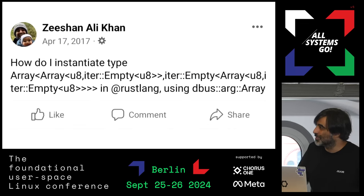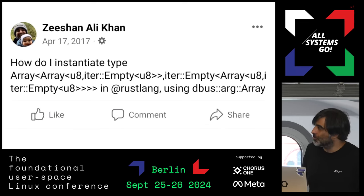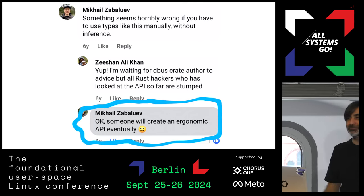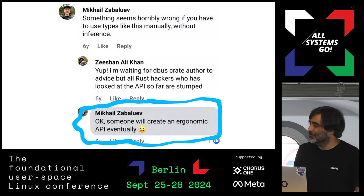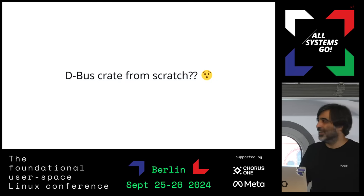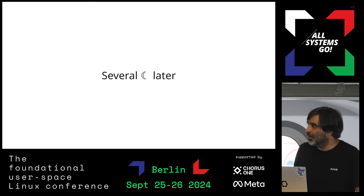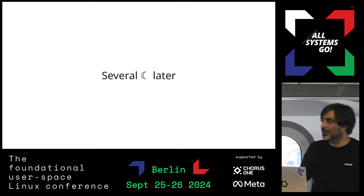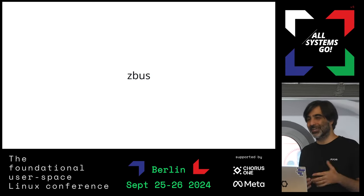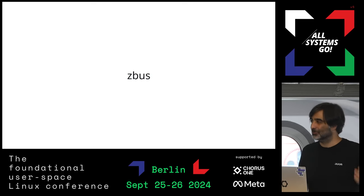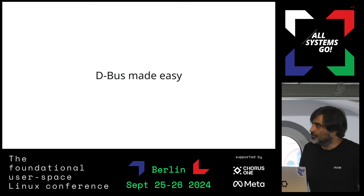I was asking on a Facebook post: 'Does anyone know how to deal with these very complicated types?' A friend of mine who also does Rust said someone would eventually come up with a more ergonomic Rust library for DBus. I was like, 'Yeah, maybe they would' — I didn't know it would be me. But soon after I realized maybe it could be me, and I started thinking about a DBus crate from scratch. Several months later, I was able to create a library called ZBus.